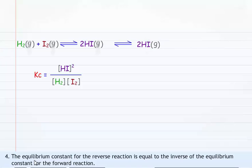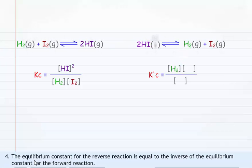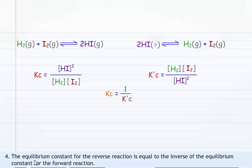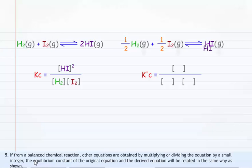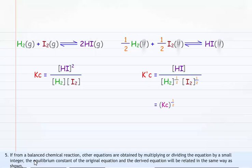The equilibrium constant for the reverse reaction is equal to the inverse of the equilibrium constant for the forward reaction. If from a balanced chemical reaction, other equations are obtained by multiplying or dividing the equation by a small integer, the equilibrium constant of the original equation and the derived equation will be related in the same way as shown.